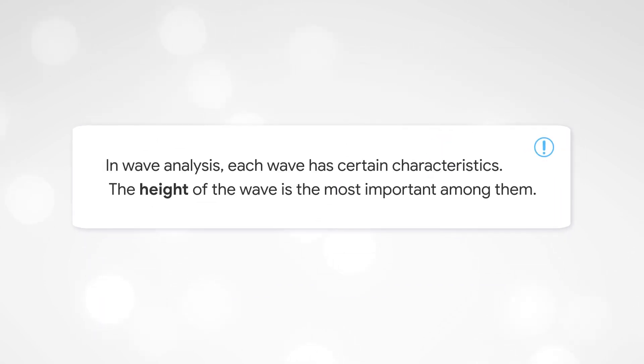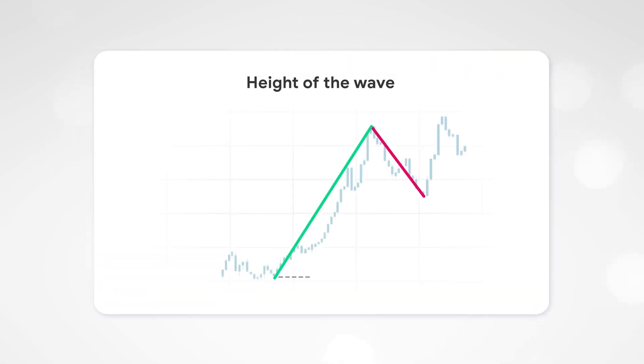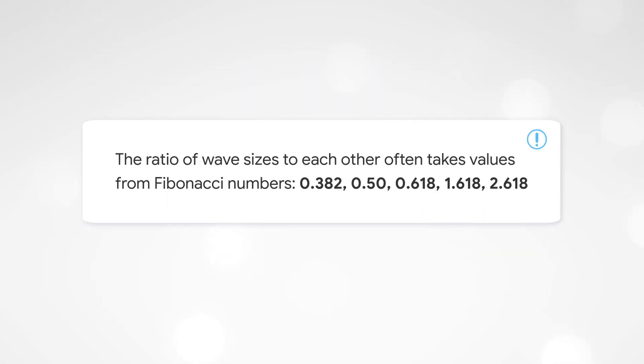In wave analysis, each wave has certain characteristics. The height of the wave is the most important among them. The wave height is measured from the minimum low to the highest high and is projected onto the vertical axis. The ratio of wave sizes to each other often takes values from Fibonacci numbers.